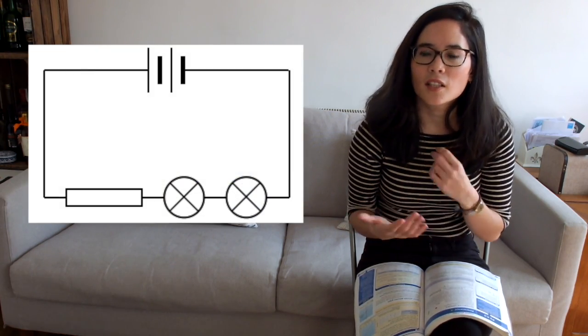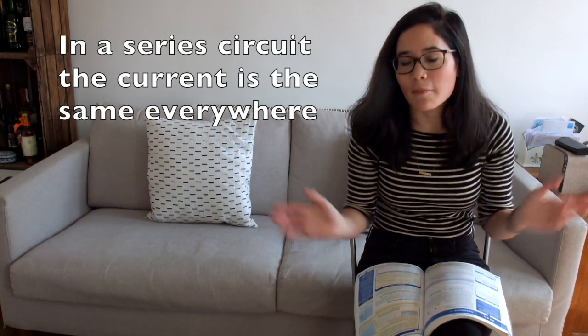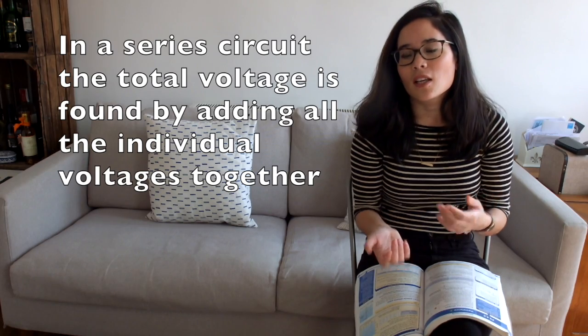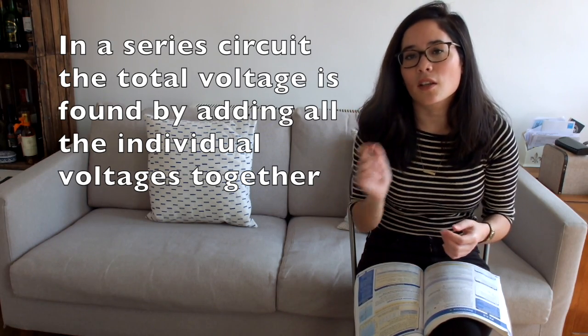Now let's look at circuit rules. How does the current compare in a series circuit? Remember, the current is the same everywhere in a series circuit. However, how does the voltage compare? The total voltage coming out of the battery is the sum of all the individual voltages of all the other components. This is why if you keep adding more and more bulbs to a series circuit, you'll see them get dimmer and dimmer because they have to share out their voltage.